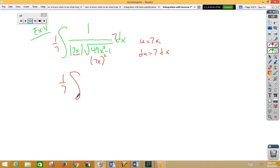1 seventh integral, 1 over absolute value. Now notice, u is 7x. So I'm going to replace that with a u. Root u squared minus 1 du. Well, that's inverse secant, so 1 fourth, or 1 seventh inverse secant, 7x plus c.